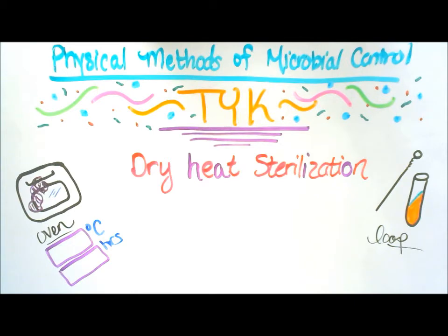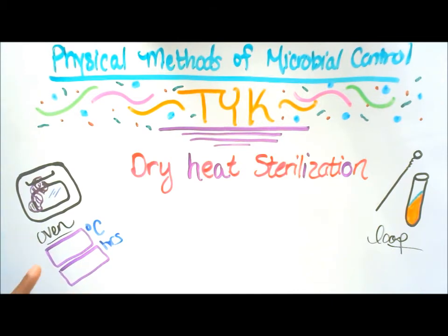The second question is: what are the two examples of dry heat sterilization? And the third question: fill in the blank under oven — what is the temperature needed to kill microbes, and how long do those microbes have to stay at that particular temperature?